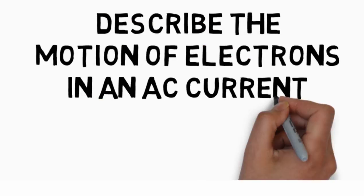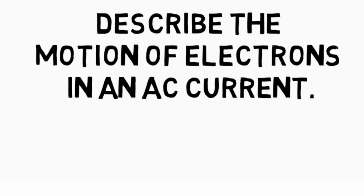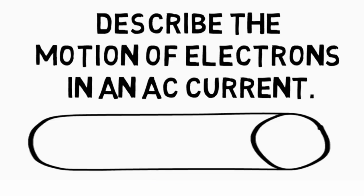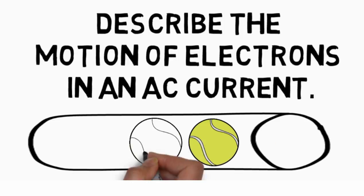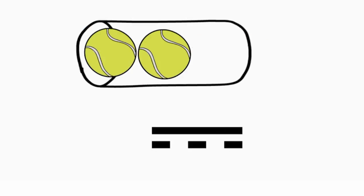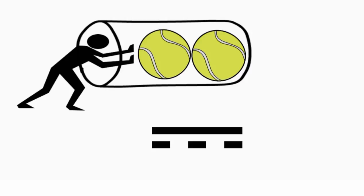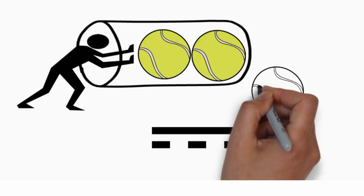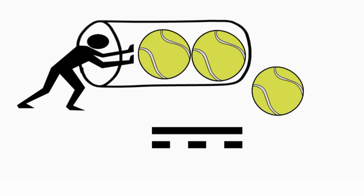Describe the motion of electrons in an AC current. Well, picture a tube of tennis balls. Direct current is when you take a ball and push it in one end, causing one at the other end to pop out.